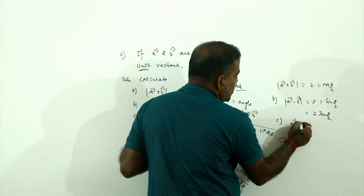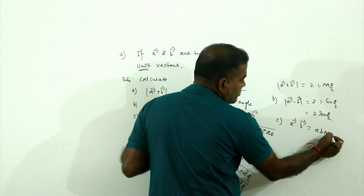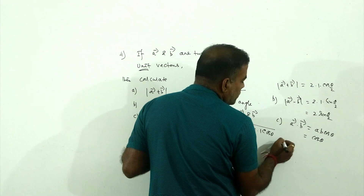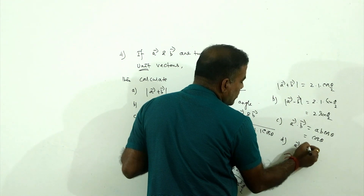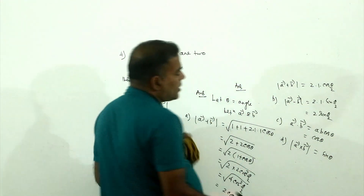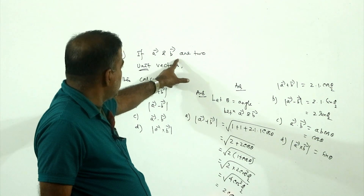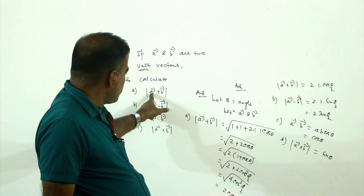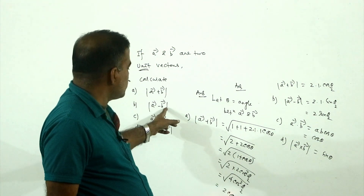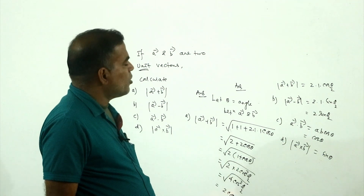For part C, A·B equals AB cos θ. Since both are unit vectors with magnitude 1, A·B equals cos θ. For part D, |A cross B| equals AB sin θ equals 1×1×sin θ equals sin θ. Summary: |A+B| = 2cos(θ/2), |A−B| = 2sin(θ/2), A·B = cos θ, |A×B| = sin θ.